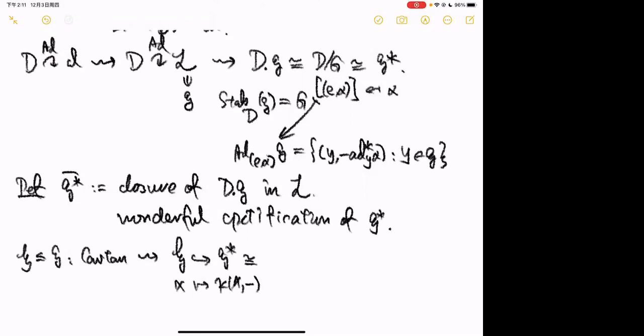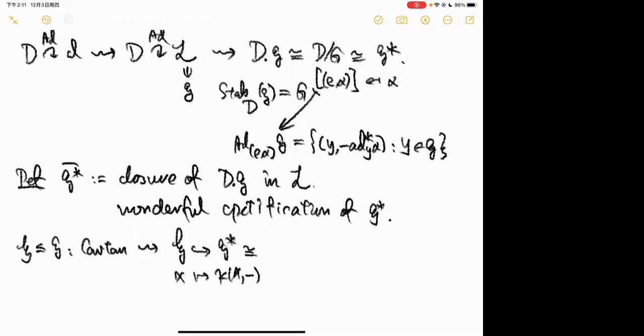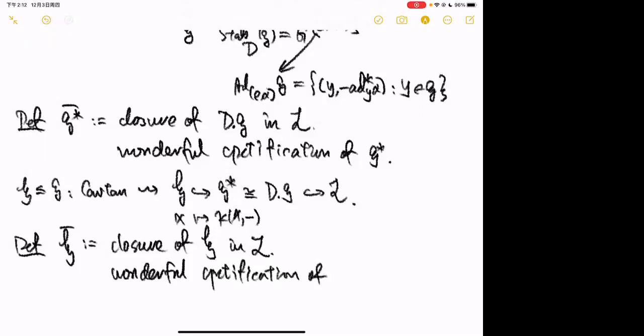Can you say something about this wonderful compactification of G*? What are you adding? This is actually very complicated. Let me finish the next definition, give some motivation, and then give some examples. I identify G* with the D-orbit as described, and then H-bar is the closure of H inside L. This is called the wonderful compactification of H.